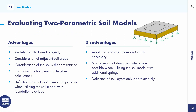Regarding the advantages and disadvantages of the two-parametric soil models: advantages are realistic results if used properly, the ability to consider adjacent soil areas and soil shear resistance, short computation time because there is no iterative calculation, and the definition of structure interaction is possible when using the model with foundation overlaps. Disadvantages include additional consideration and inputs necessary, the need to estimate the subsidence spacing, no definition of structure interaction when using additional springs, and soil layers can only be defined approximately.